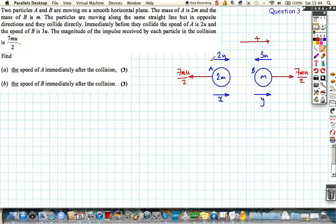This is really important. If we consider particle A, the impulse equals the final momentum minus the initial momentum. We know the impulse is 7mu over 2, but it's minus 7mu over 2 because the impulse on A is left. It's either reducing the speed or reversing its direction, which means it must be a negative impulse.